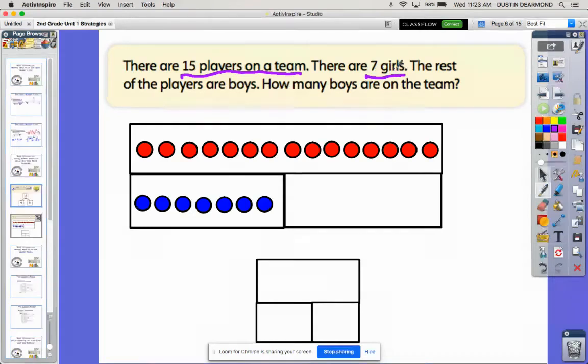If I picture those 15 players all lined up together, let's say each one has a number on their jersey. Start with 1, 2, 3, 4, all the way up to 15. And the first seven - 1, 2, 3, 4, 5, 6, 7 - is girls. If you open up your eyes and look at my picture, here's my 15.